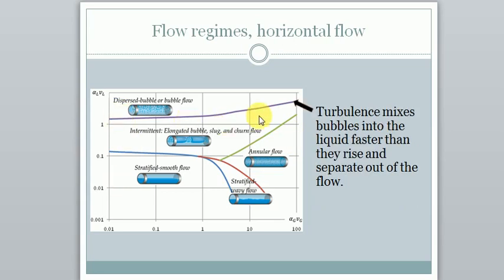This uppermost line is defined by the turbulence. If the liquid flows quite fast it will create so much turbulence that the bubbles which tend to rise to the upper side of the pipe all the time will be mixed into the liquid faster than they rise. So for high liquid flow we tend to get a bubble flow.